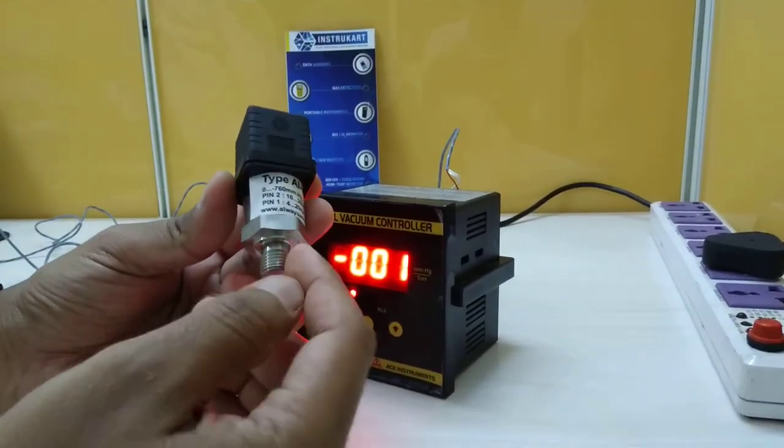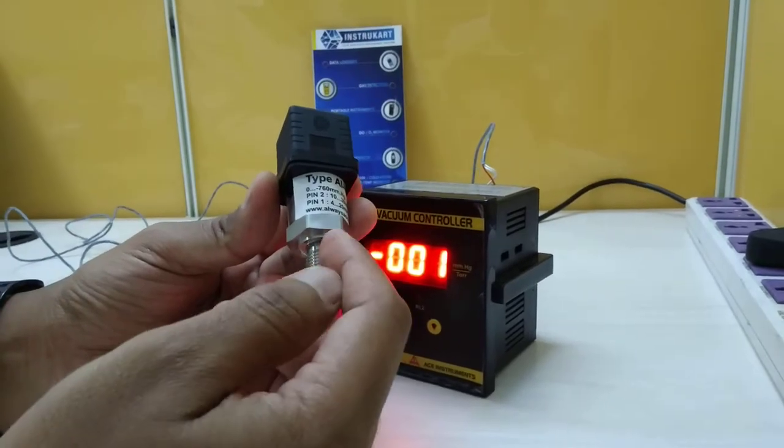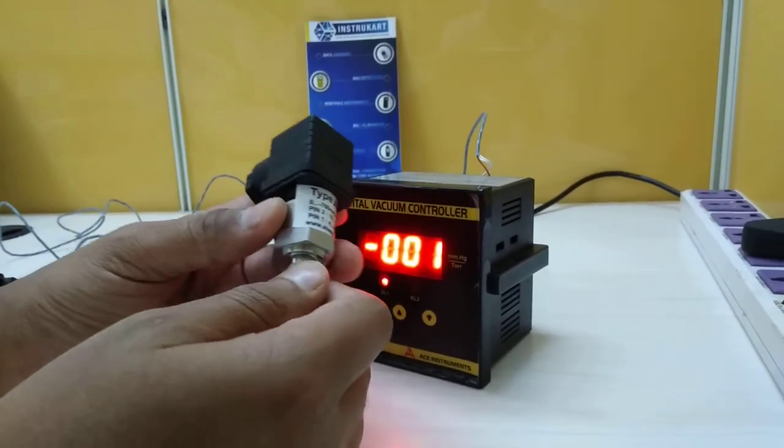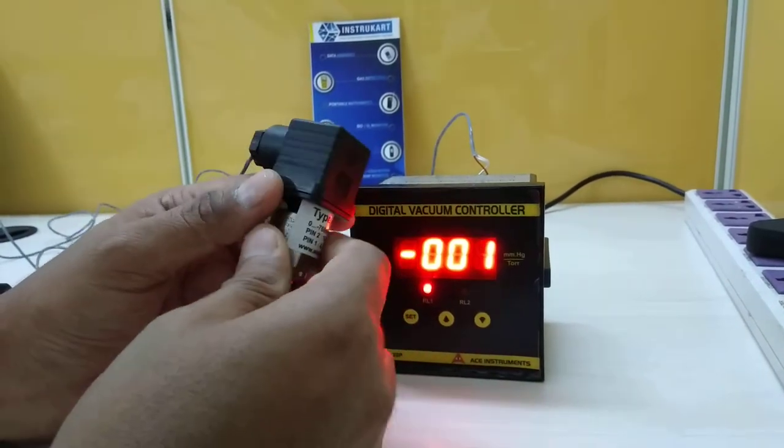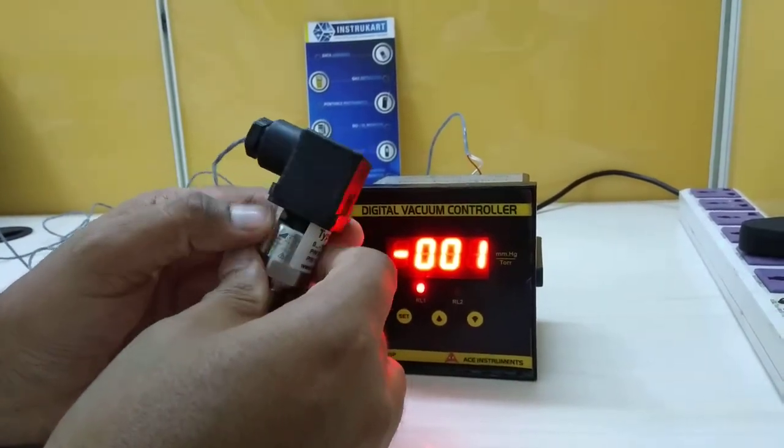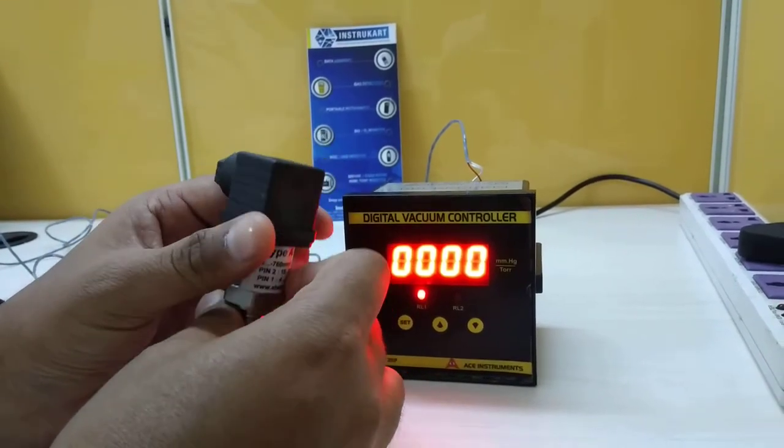The thread size is quarter inch male threaded end and this particular instrument comes with a calibration certificate and it's got a warranty of one year.